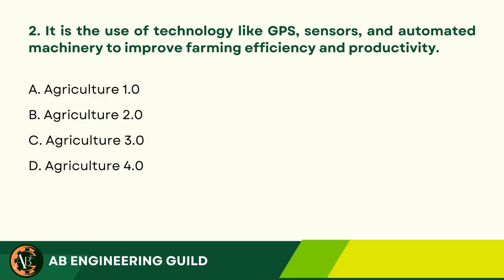Answer: D. Agriculture 4.0. Question 2: It is the use of technology like GPS, sensors, and automated machinery to improve farming efficiency and productivity. A. Agriculture 1.0. B. Agriculture 2.0. C. Agriculture 3.0. D. Agriculture 4.0.